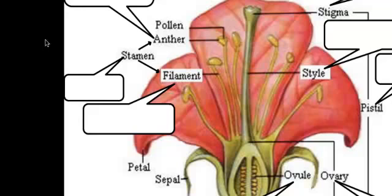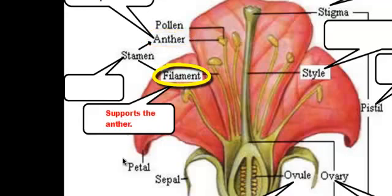Now the pollen of a flower is produced by a structure called the anther. The anther is this structure here at the top of this thin stalk, and this thin stalk is called the filament. The filament's main job is to support the anther, to hold it up.